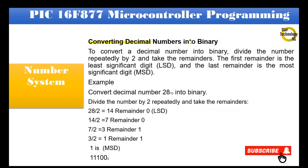Converting decimal numbers into binary: To convert a decimal number into binary, divide the number repeatedly by 2 and take the remainders. The first remainder is the least significant digit and the last remainder is the most significant digit. Example — Convert decimal number 28 into binary: 28 ÷ 2 = 14 remainder 0 (LSD); 14 ÷ 2 = 7 remainder 0; 7 ÷ 2 = 3 remainder 1; 3 ÷ 2 = 1 remainder 1 (MSD). Reading from bottom to top: 28 decimal = 11100 in binary.